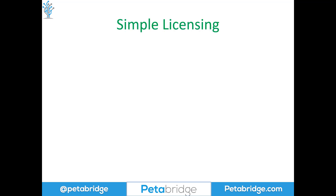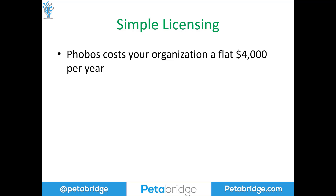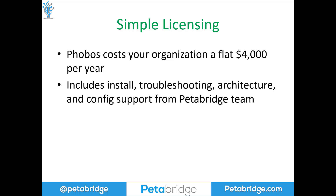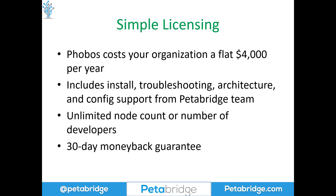Phobos has a very simple licensing model that has been popular with customers since Phobos 1.0. Phobos costs your organization a flat $4,000 per year. This is a site license covering all of your developers and all of your projects that use Akka.NET. The license includes installation, troubleshooting, architecture, and configuration support from the Petabridge team. We're very flexible and work hard to support our customers. We also offer a 30-day money-back guarantee — if you install Phobos and aren't satisfied, we will fully refund your money within 30 days if you request it.